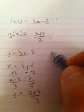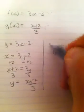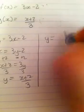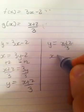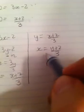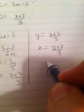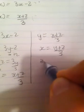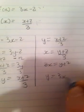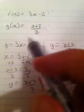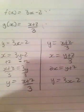Now if we did the same thing for g of x, rewriting it as y equals x plus 2 over 3, switching the y's and the x's so that we have x equals y plus 2 over 3, and then solving for y. So we're going to multiply both sides by 3, that way we have 3x equals y plus 2, and then subtracting 2 from both sides, so that we have y equals 3x minus 2, which as we can see is the same as f of x.